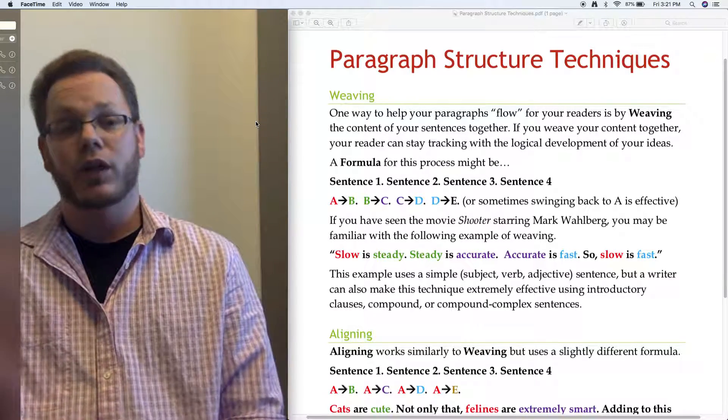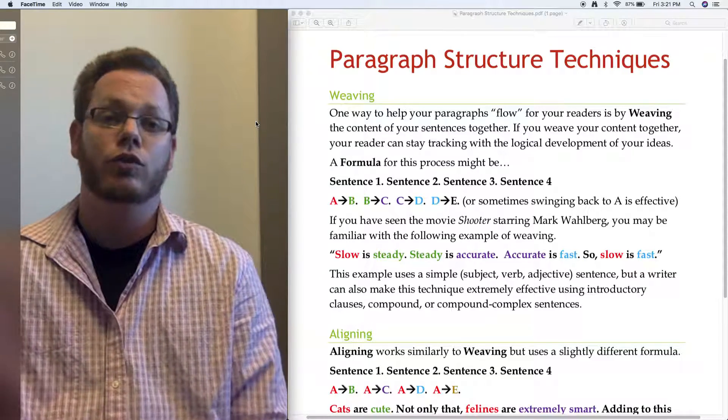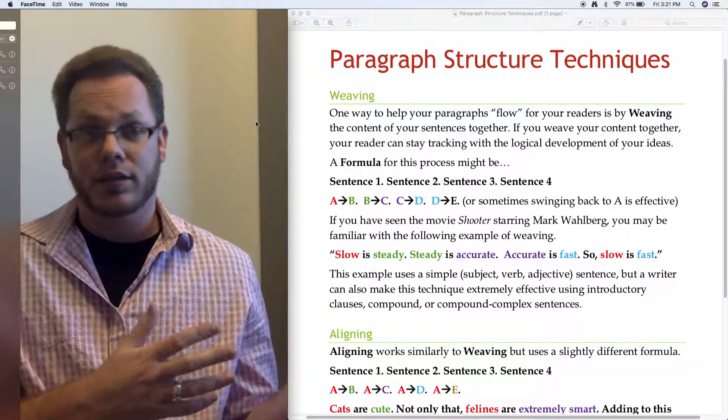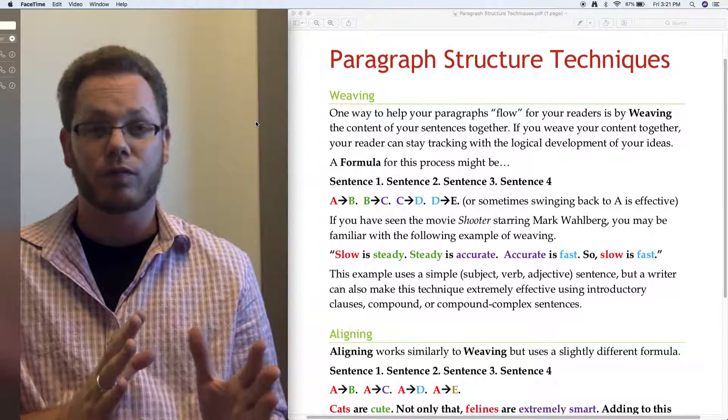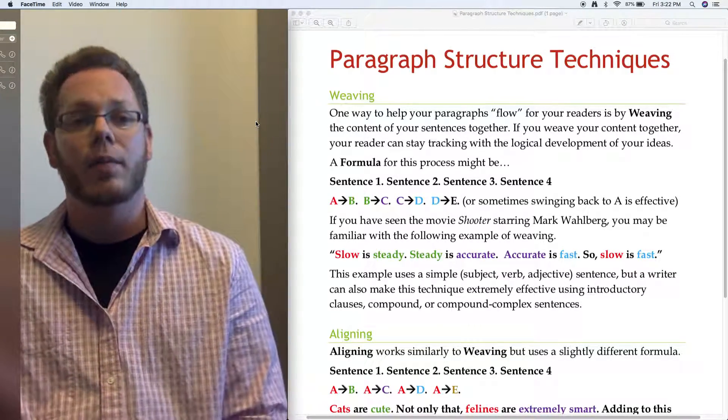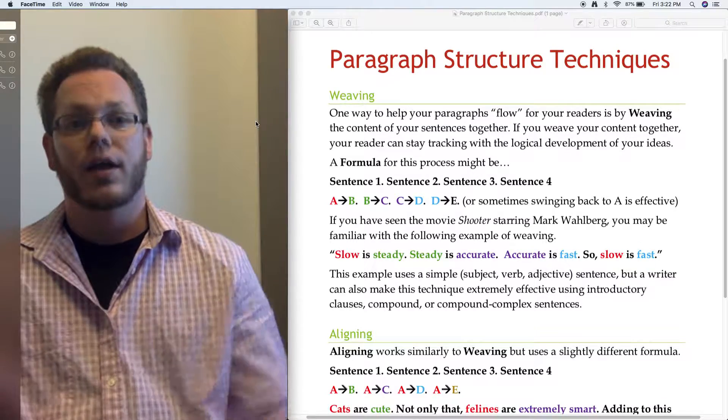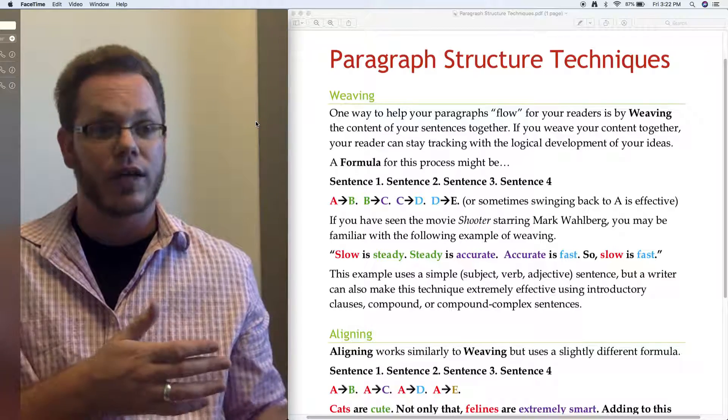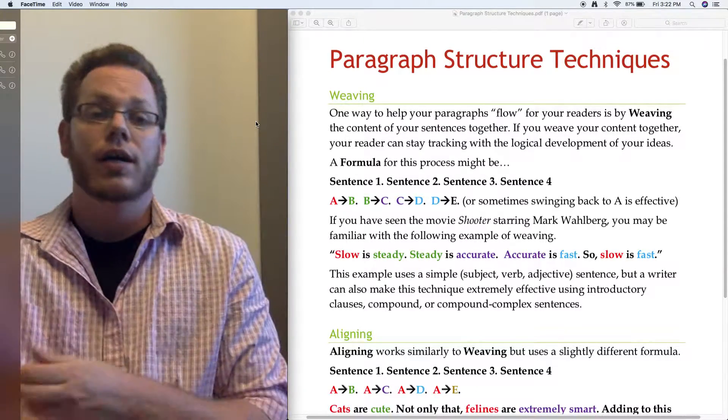you may be familiar with the following example of weaving. Instead of just saying slow is fast, which doesn't have a logical progression and feels like it would jump ideas, the character in the movie says slow is steady, steady is accurate, accurate is fast, so slow is fast.